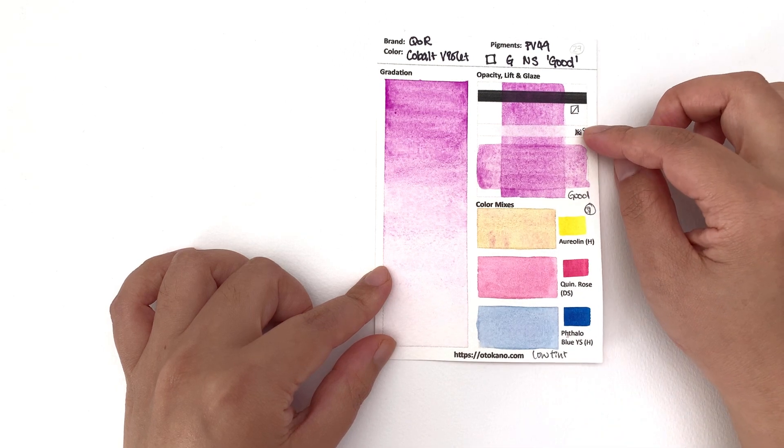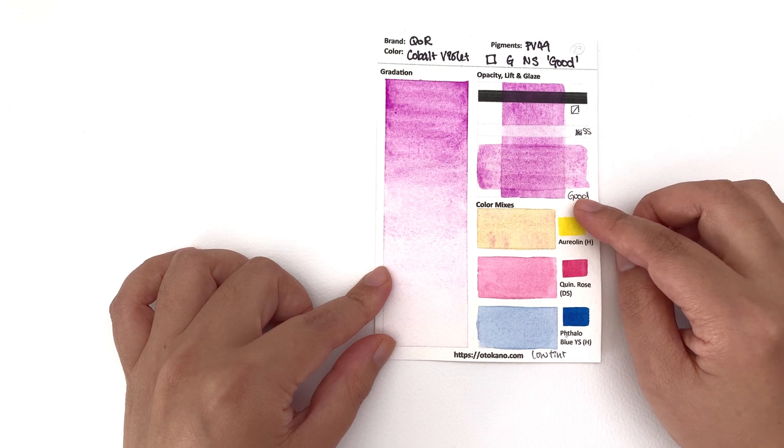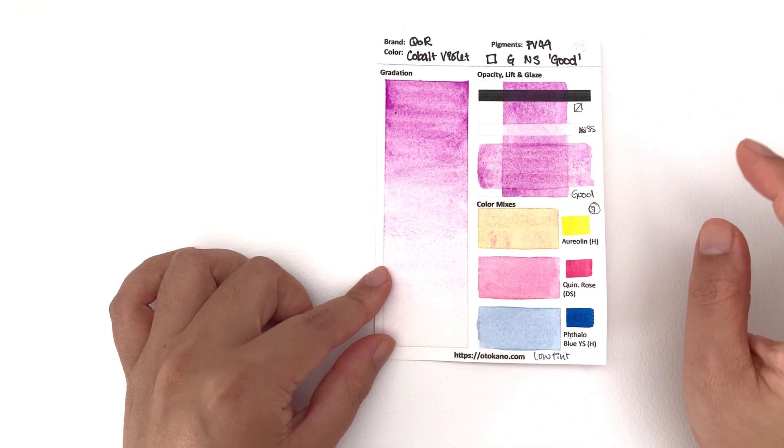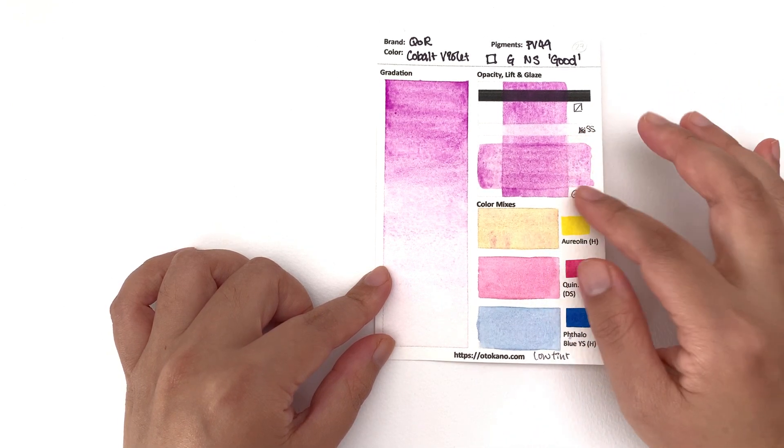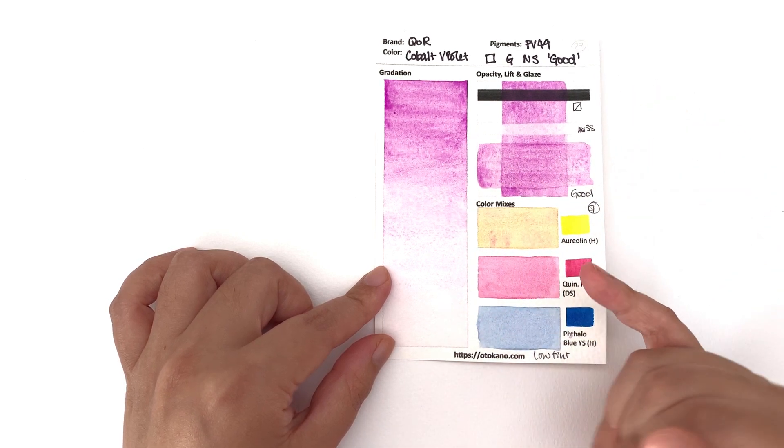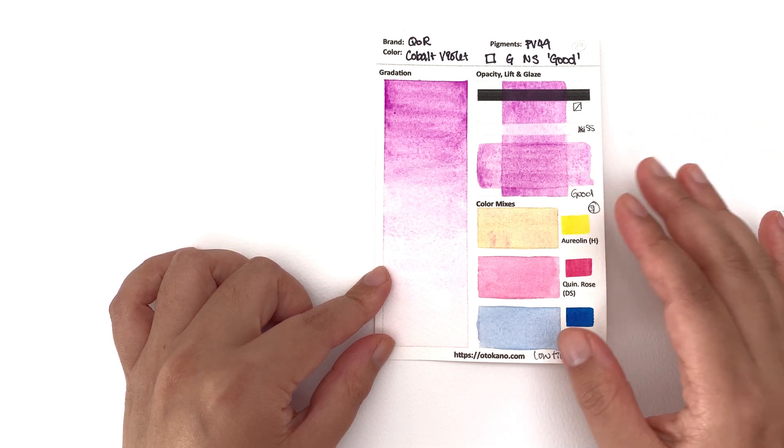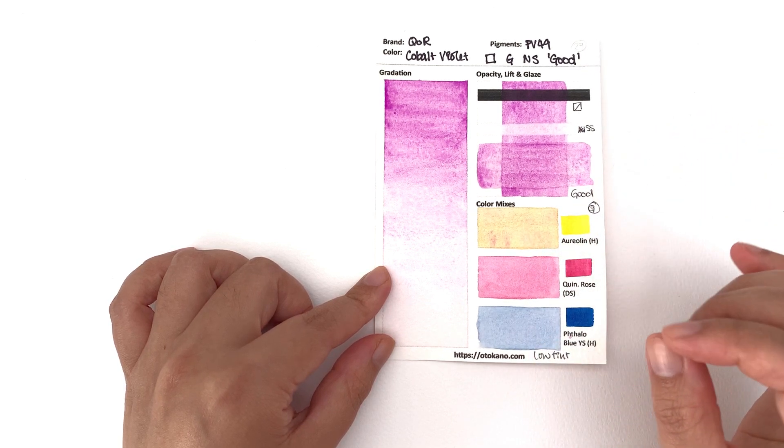Surprisingly it's a good glazer. I was surprised with this because it's only semi-staining and it's a light color, but you get really good glazing out of this. Of course it being a granulating color, it kind of covers up some of the mistakes as well. If even if there's a little bit of lift the granulation kind of fuzzes it up for you.